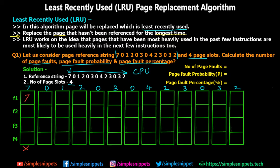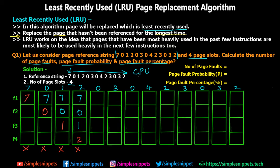For the first four steps, the frames are empty so each different page generates a page fault and gets allocated into a separate frame. Moving on to step five: page 0 is required again by the CPU. Since 0 is already in frame two from the previous step, no page fault occurs and we just write the values as they are: 7, 0, 1, 2.